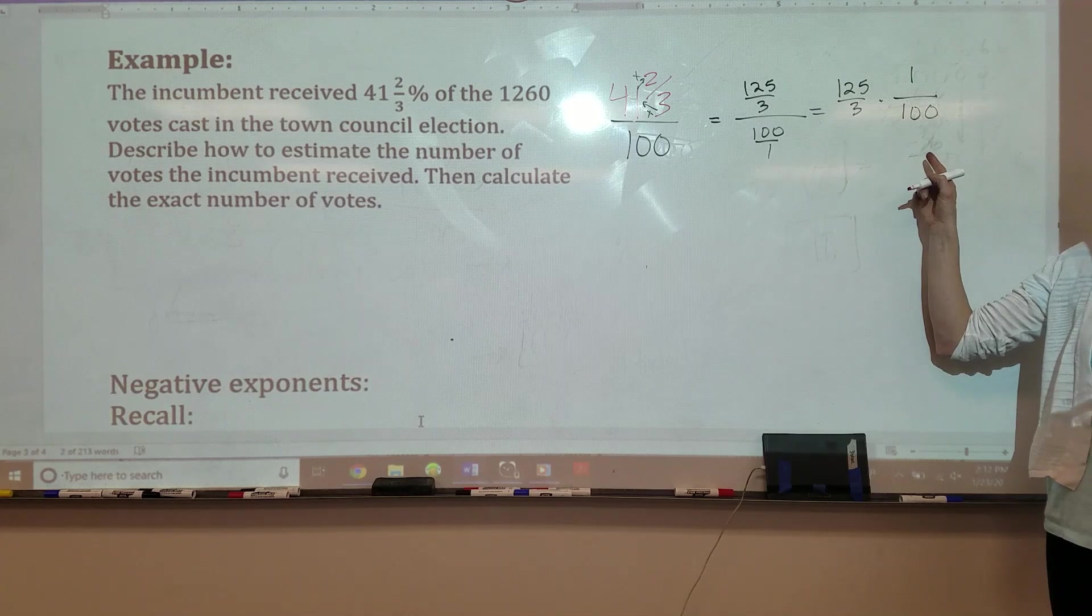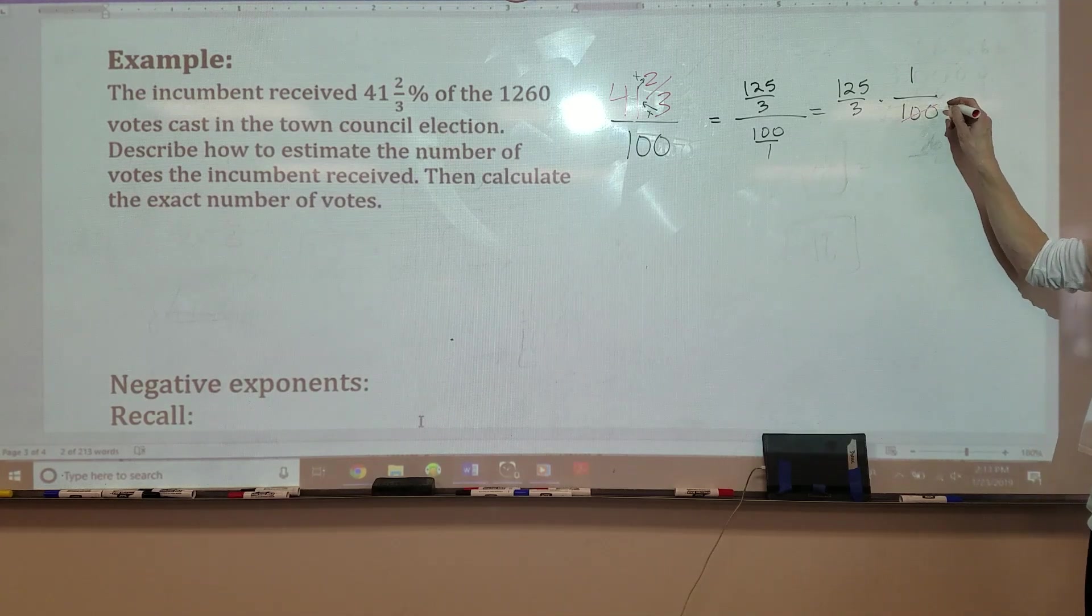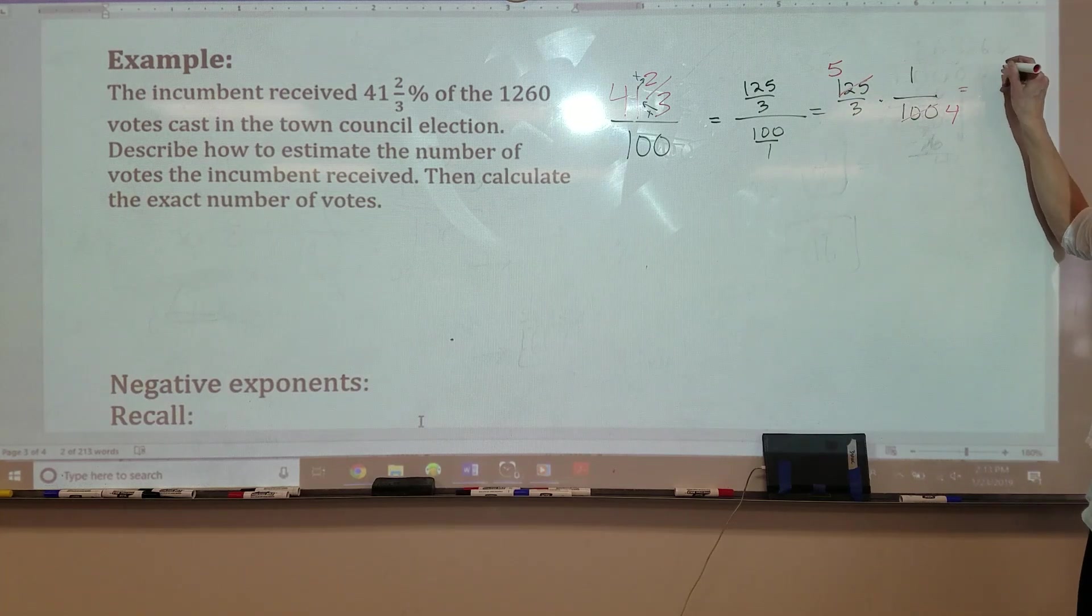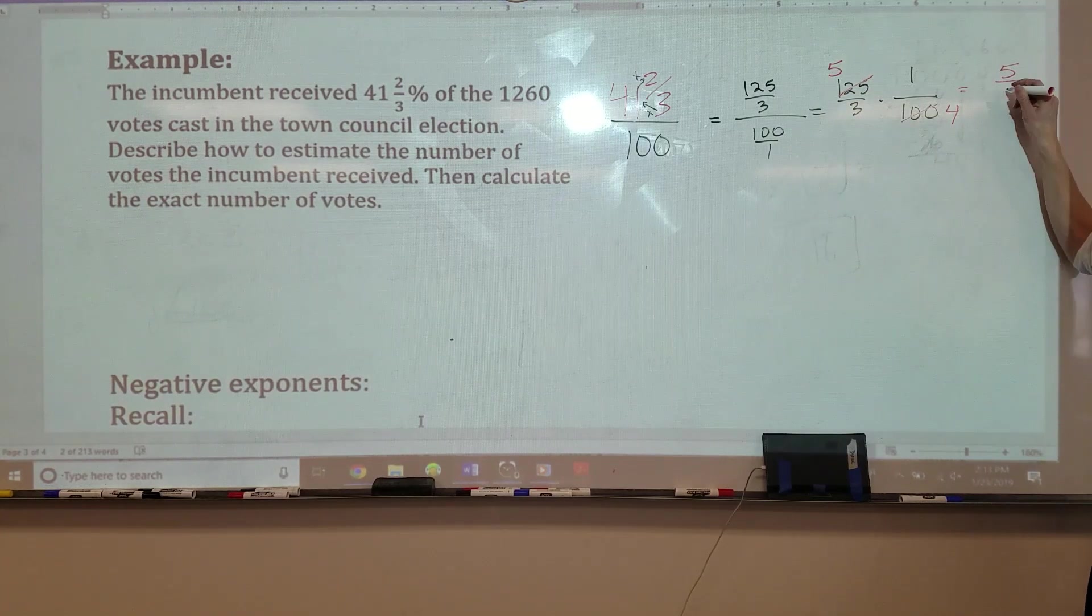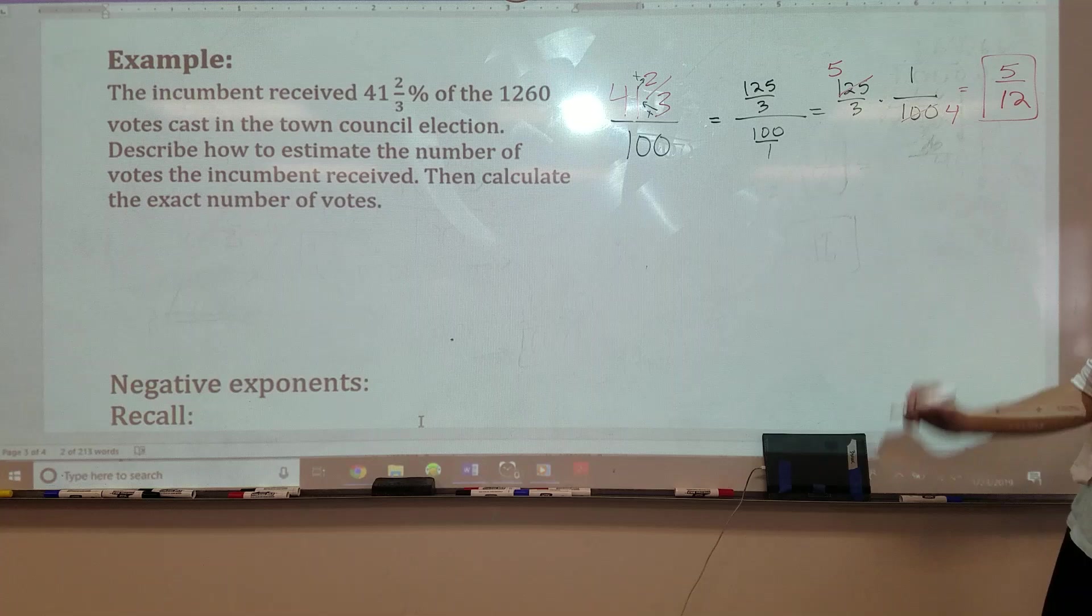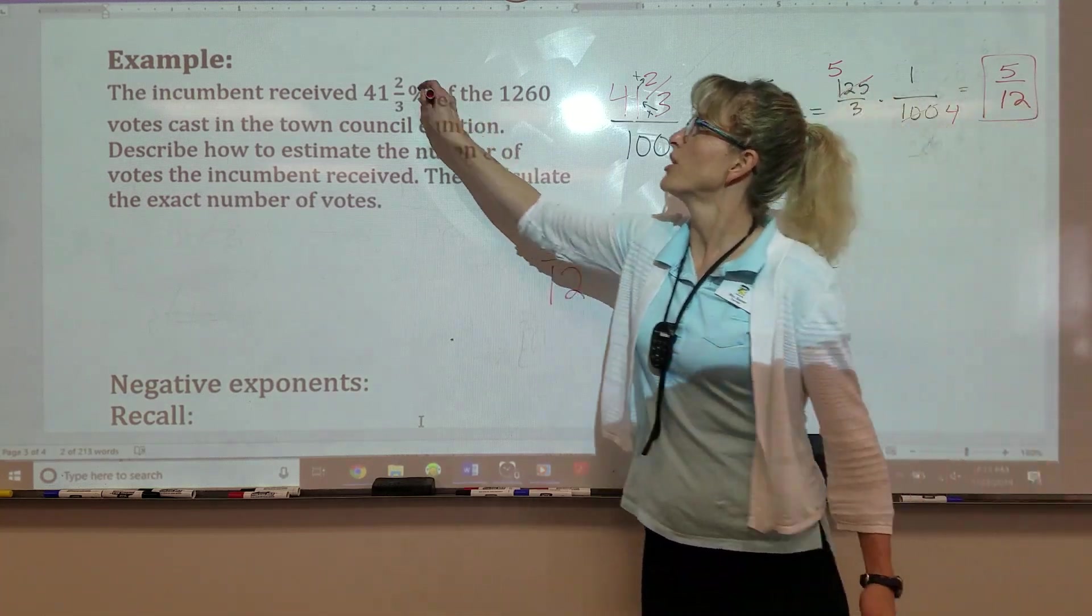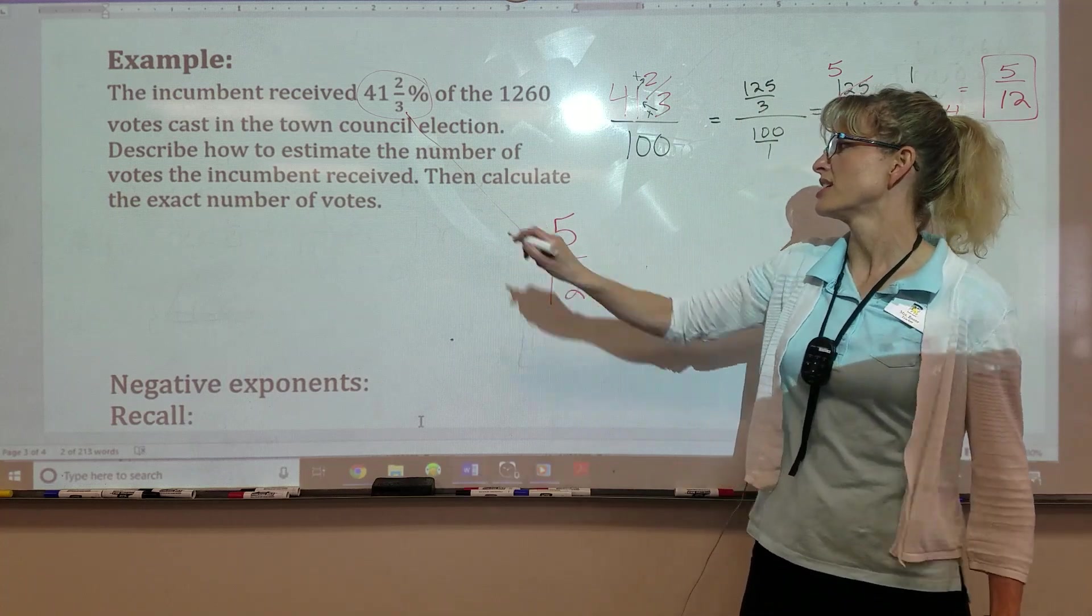There's four quarters in a dollar, five quarters in a buck 25. So I end up with five on top. Three times four is 12 on the bottom. Woo! I'm tired already. So the equivalent fraction is 5 twelfths.